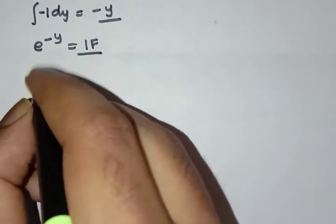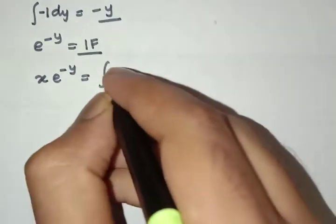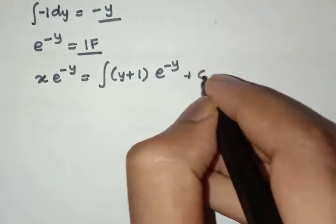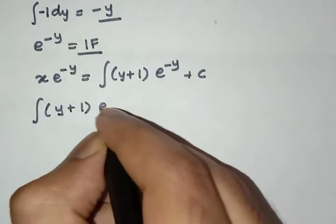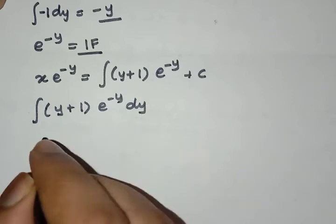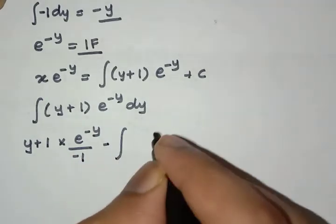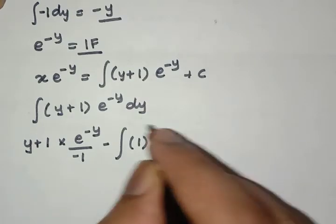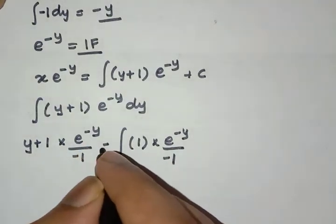We get x times e raised to minus y is equal to the integral of (y plus 1) times e raised to minus y, plus c. Using integration by parts: (y plus 1) times e raised to minus y divided by minus 1, minus the integral of the derivative of (y plus 1), which is 1, times e raised to minus y divided by minus 1, all divided by minus 1. We take this minus 1 outside.